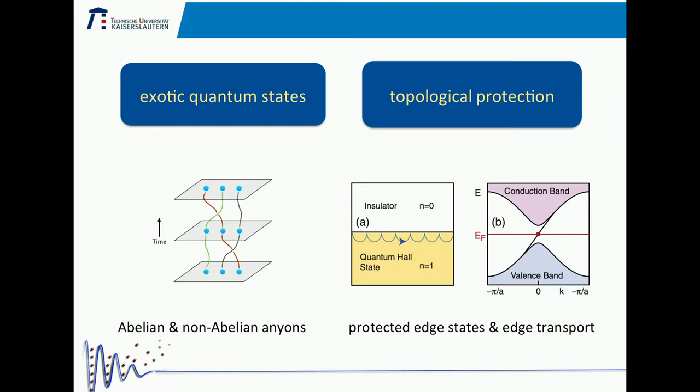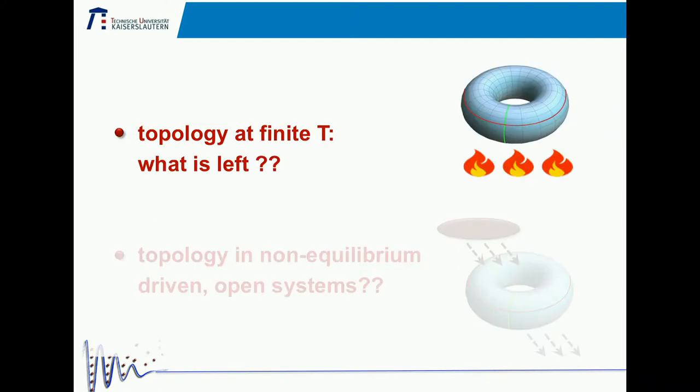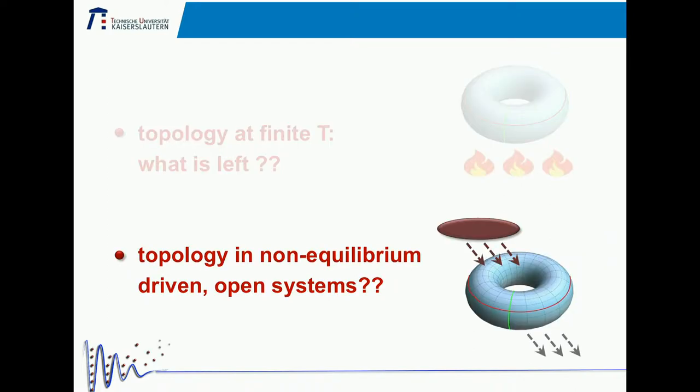What happens there is that there are edge states which are protected, so you can have protected edge states and edge transport. All of these features are very nice, but there are a couple of open questions. The first question I want to address is simply what is left from topology if you go to a system which has a finite temperature, and maybe even more interesting is the question: can we extend the notion of topology to a driven system, systems out of equilibrium.